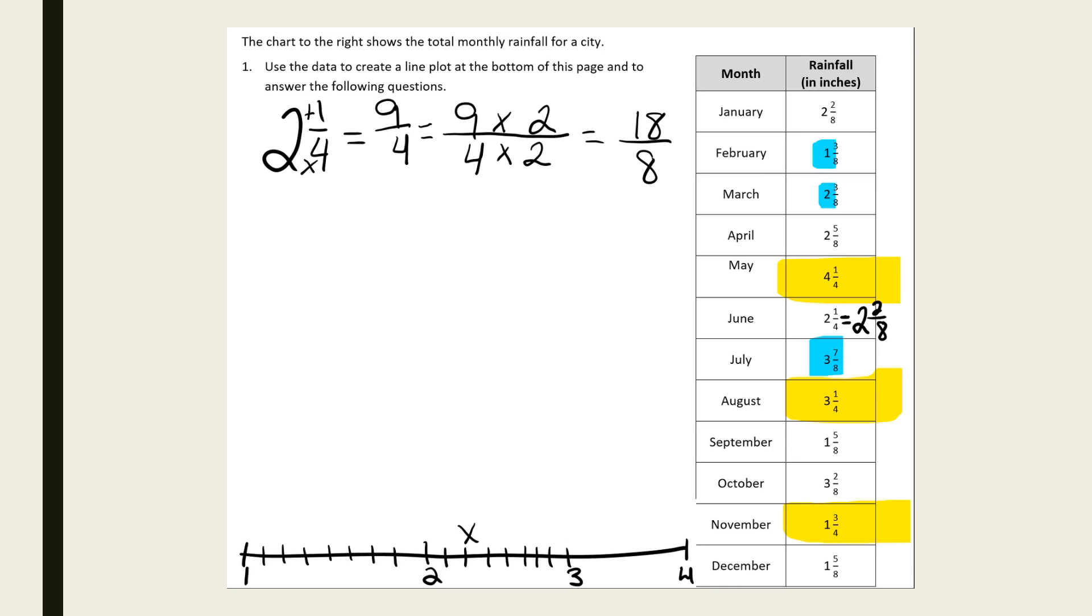The next one is 1 and 3/8. So I'm going to start at my whole number 1 and count over 3: 1, 2, 3, and put an X above that.